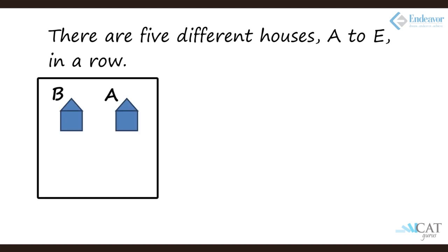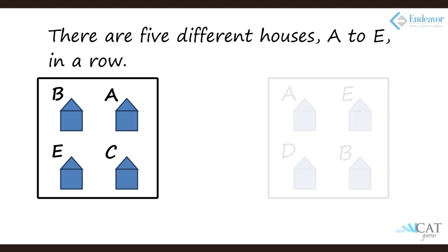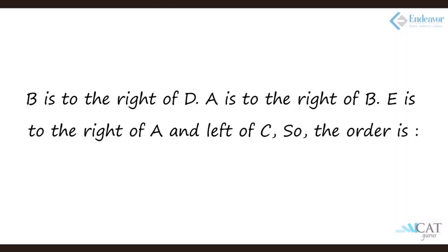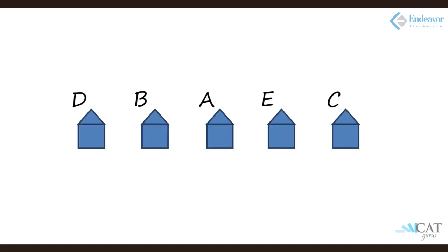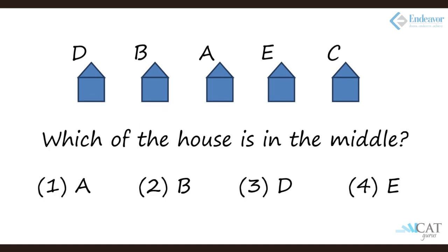Another example: there are five different houses A to E in a row. A is to the right of B; E is to the left of C but right of A; B is to the right of D. Which house is in the middle? Given these conditions: B is to the right of D, A is to the right of B, E is to the right of A and left of C — the order is D, B, A, E, C. The house in the middle is A, which is the first option.